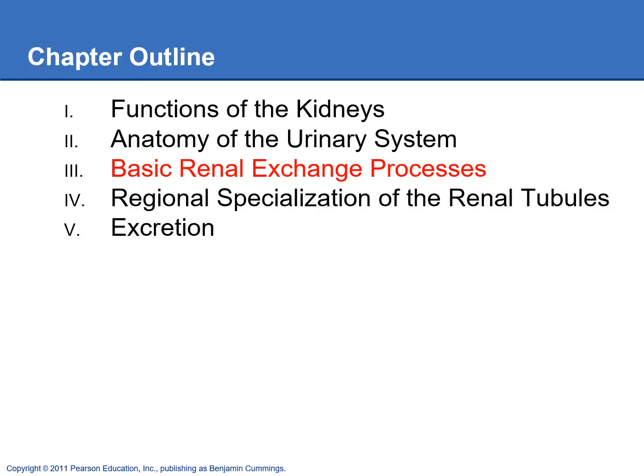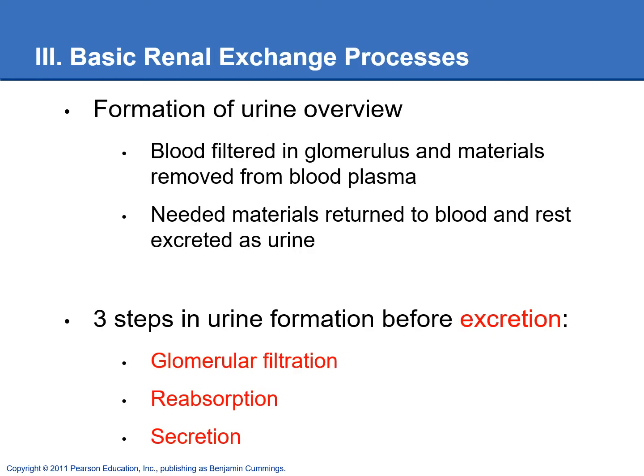We're going to take a look at glomerular filtration in this lecture. In order to form urine, there are three steps: glomerular filtration is first, and then reabsorption and secretion. We do these three steps before the urine is ready to be excreted from the body.